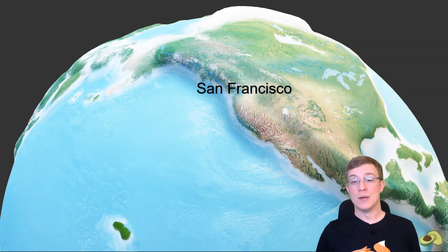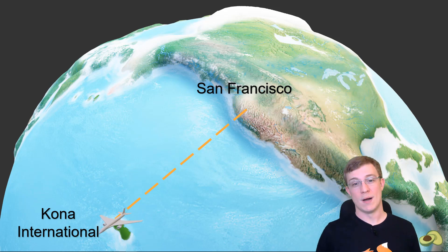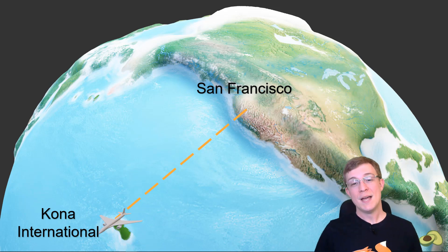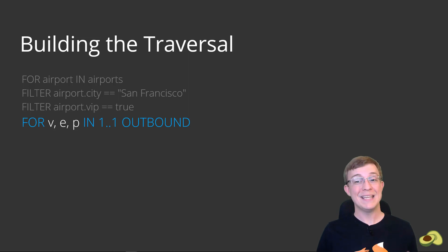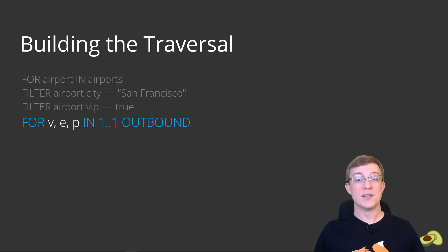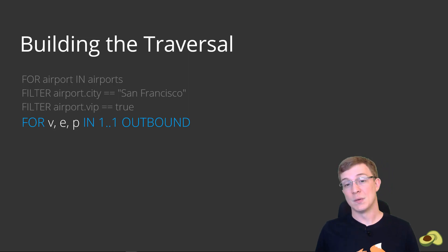After using the filter statements to narrow down the starting airport, it is time to find that flight to Hawaii. This can be accomplished using a graph traversal. The destination is the Kona region of Hawaii because they are known for growing some amazing coffees in that region. The local airport is Kona International Airport. To build the graph traversal, we will use another for loop, this time the graph variant. It will emit the edge, vertex, and path because we can filter on each variable if needed. To find a direct flight, supplying the depth of 1..1, we will get all the flights that only include one flight from San Francisco to Kona International. We supply the outbound keyword to indicate we want flights leaving San Francisco — this would be _from San Francisco and _to Kona International.